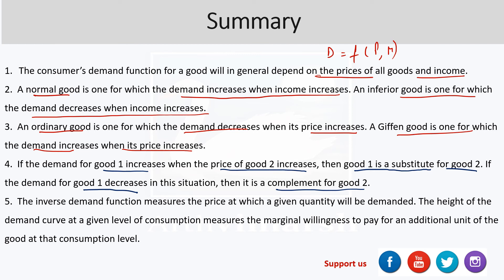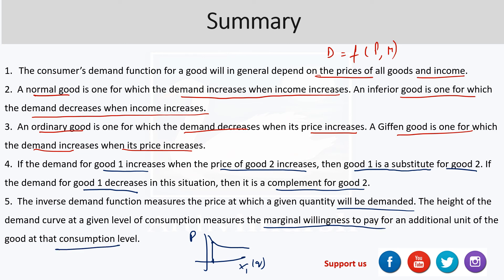In the case of the inverse demand function, it measures the price at which a given quantity will be demanded. We represent price as a function of quantity. The height of the demand curve at a given level of consumption — say at consumption level x naught prime — measures the marginal willingness to pay for an additional unit of the good at that consumption level.